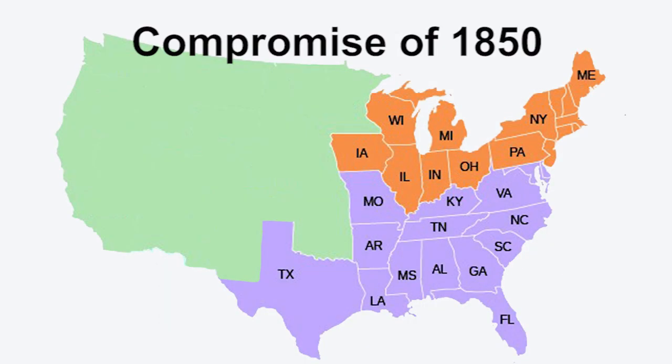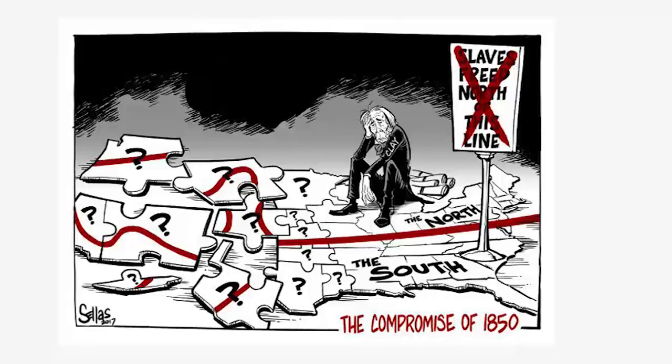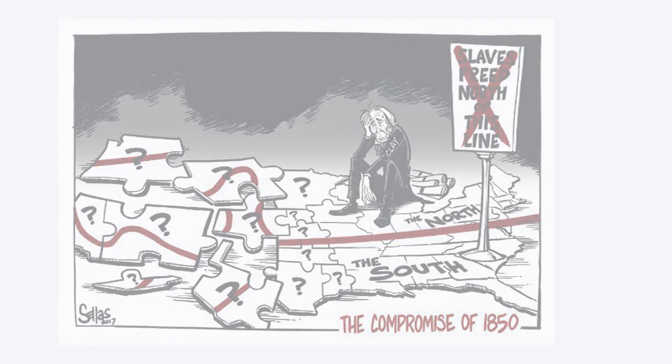AP students better know all this already. The first part of the Compromise of 1850: California is admitted to the Union as a free state — no slavery in California. That's the part that's going to make northerners happy. Another part that will make northerners happy: within the Compromise of 1850, they abolished the slave trade in the city of Washington, D.C. So both of those parts are designed to keep the free states happy.